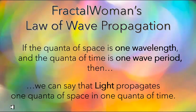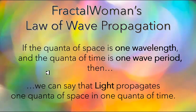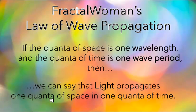If we have a wave of a certain frequency and we know what the frequency is, then we know what the wavelength is and we know what the wave period is. So if the quanta of space is set to one wavelength of that frequency and the quanta of time is set to one wave period of that wavelength, then we can say that light propagates one wavelength in one wave period. It's important to state that if we set the quanta of space to one wavelength and the quanta of time to one wave period, then light propagates one unit of space in one unit of time.